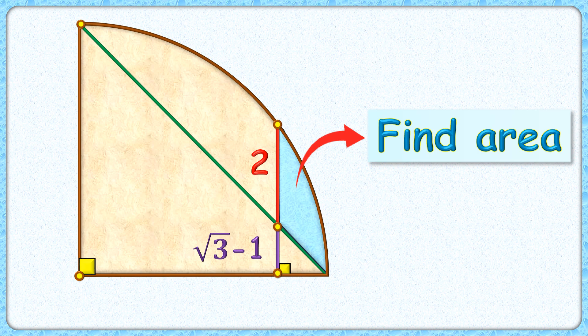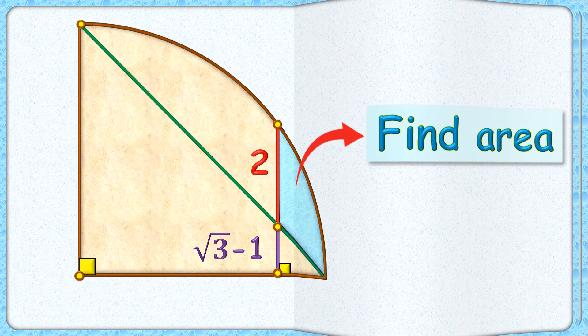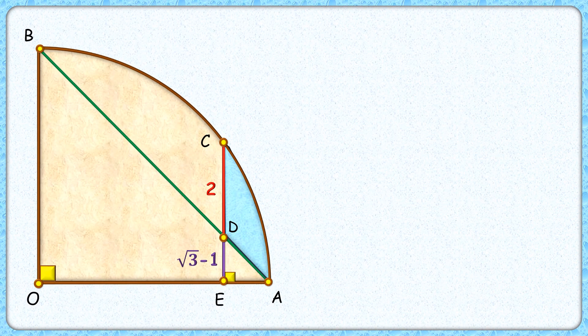This interesting question given to us is the quadrant. The length of this red and purple line segment is 2 and root 3 minus 1 centimeter. The exciting part is with this limited data we have to find the area of this blue shaded region. Let's check this interesting solution by starting with assuming the radius of the quadrant as R centimeter.